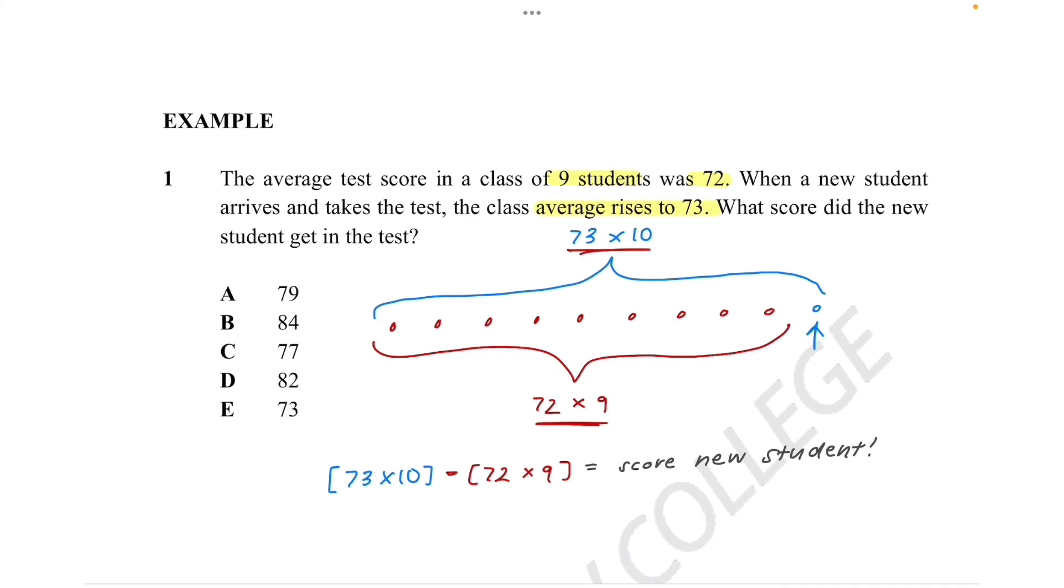So when you times anything by 10, we just know we just add a 0. So it's just 730. And now we need to minus 72 times 9. Okay, let's do a little bit of multiplication. 72, 9.